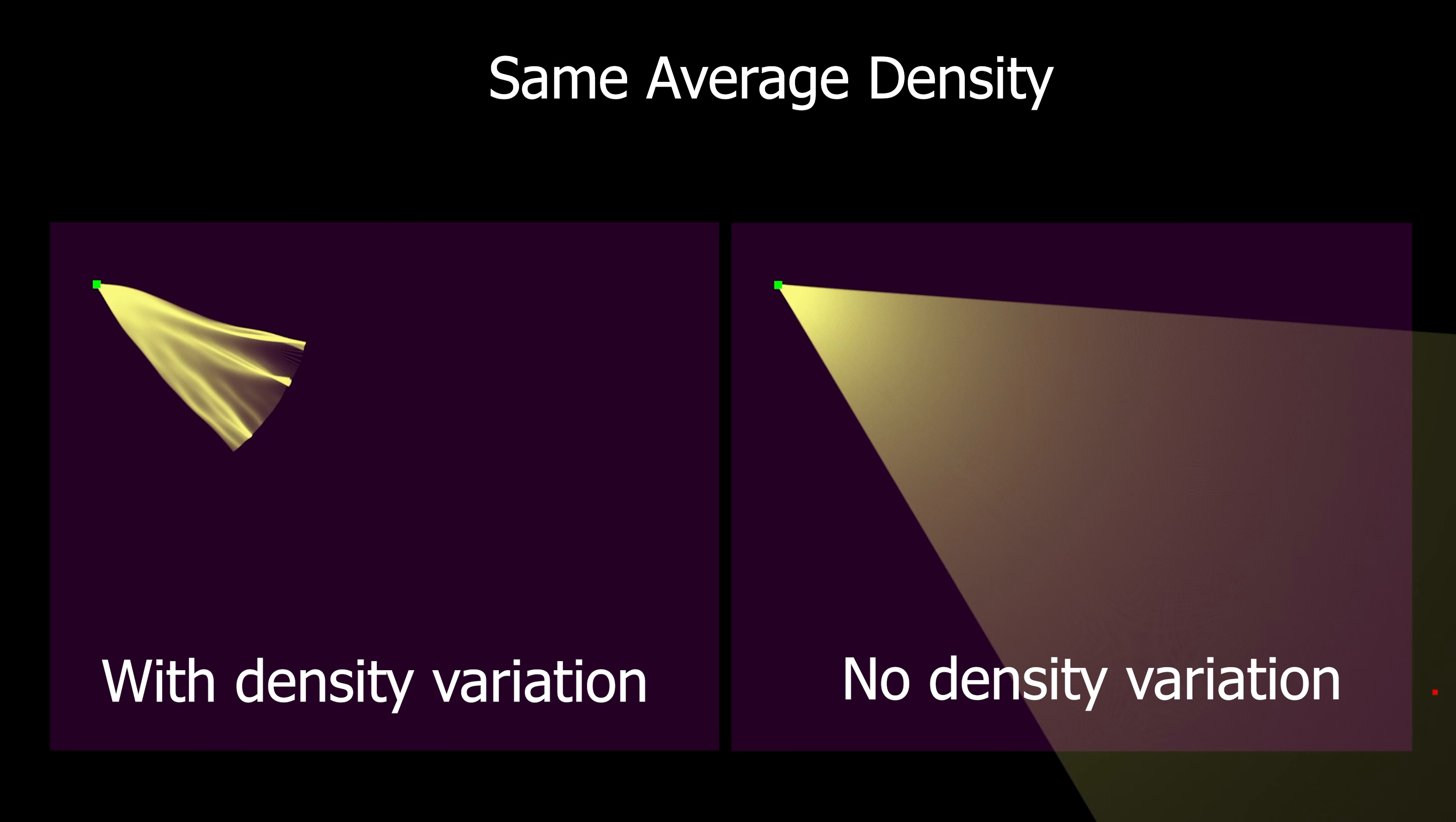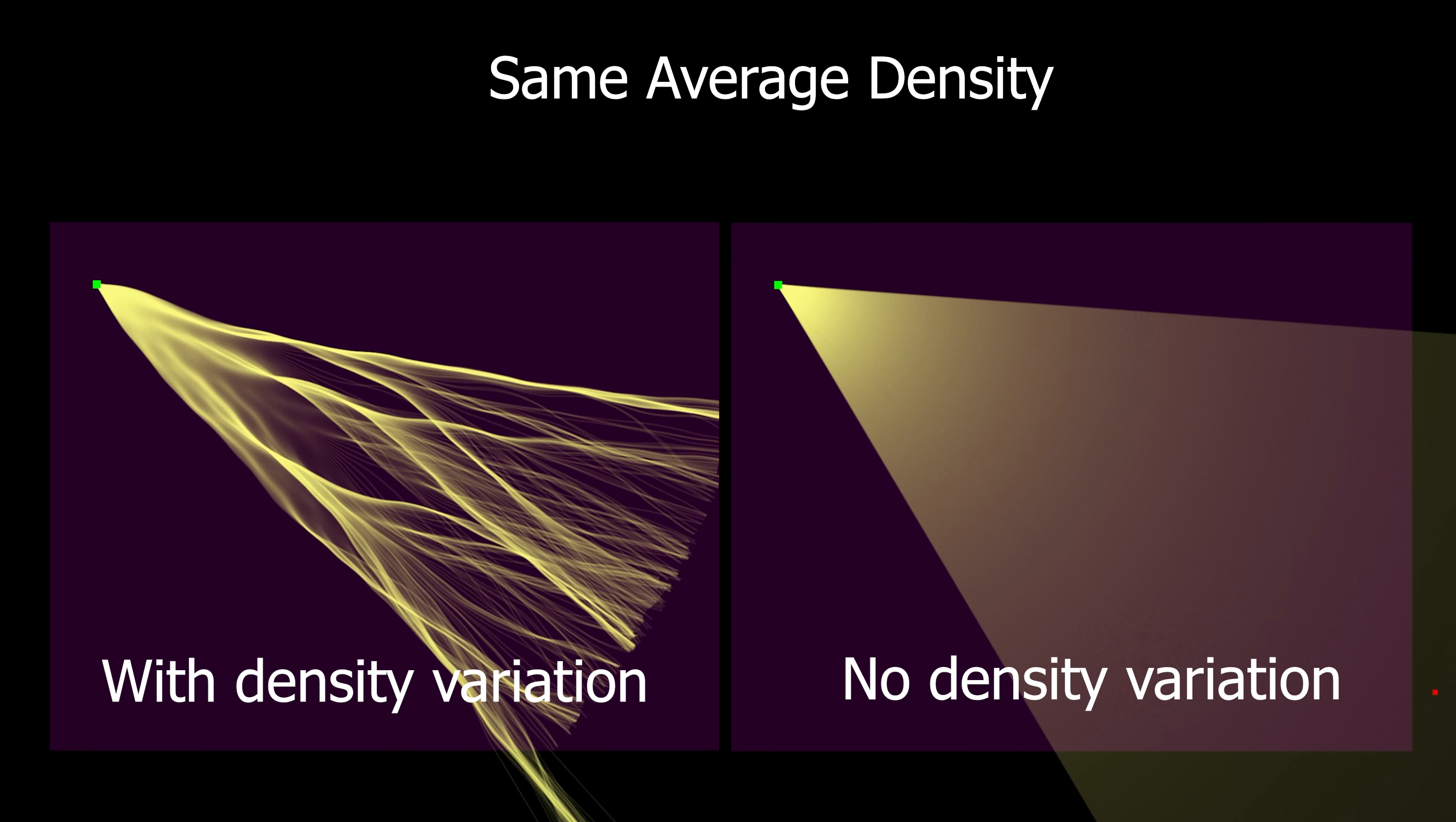For example, here are two models with the same average density. In one of them, there's purposeful variation in the refractive index, but the same average. And in the other, there's no variation. So you don't see branch flow unless you model the small imperfections that exist in real life.